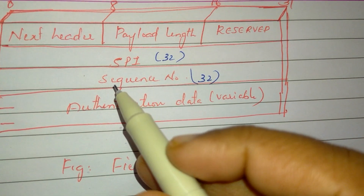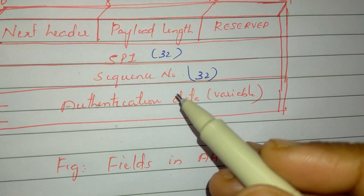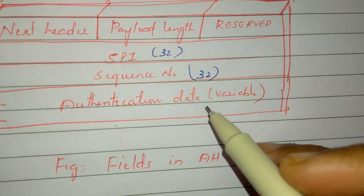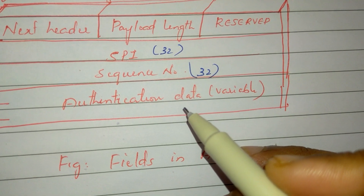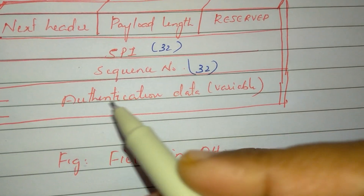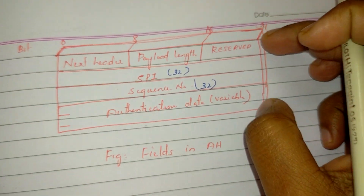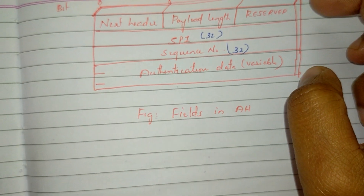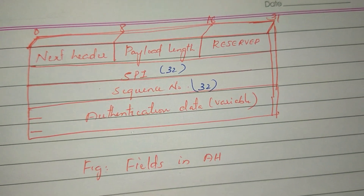If a sequence number exists, you will write the sequence number. Then we check if there is a sequence number on the receiver side. The authentication data field is of variable length — here is the MAC, the message authentication code. This is a 32-bit header field.